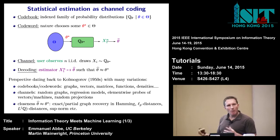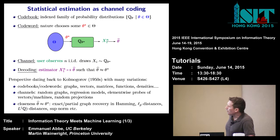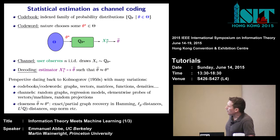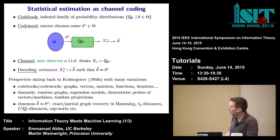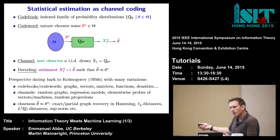This kind of perspective dates back to Kolmogorov with lots of variations. Codewords can be graphs — that will be our first example — our second example will be vectors, and our third will be functions. Depending on the problem, the set of codewords will be different kinds of objects. The channels can be random graph models, regression models, element-wise probe models, or random projections of your data. Just like we have BEC, BSC, and AWGN, here we have many different kinds of channels. The closeness measure — how close is theta hat to theta star — in desirable cases can be an exact decoding problem, or with an infinite codebook we might use norms or Hamming distance on the edges of a graph.